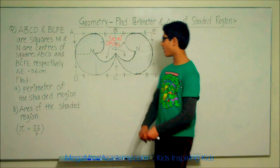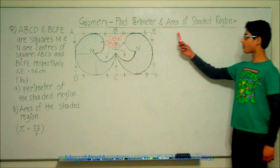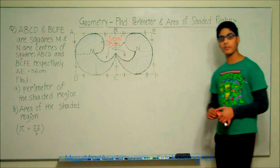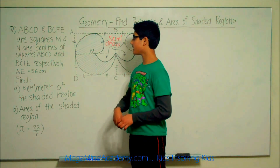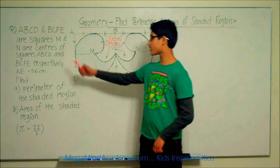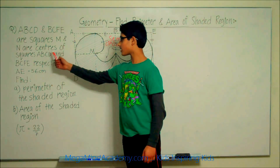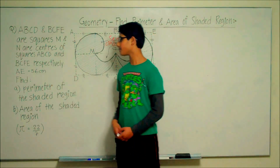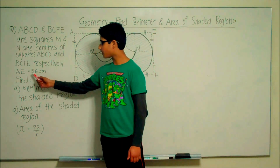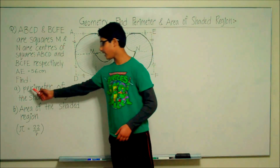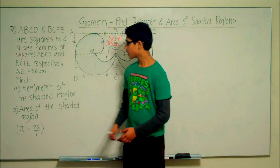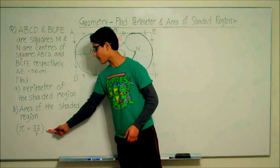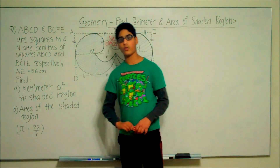Today we're going to learn about geometry, finding the perimeter and area of the shaded region. We have a problem where ABCD and BCFE are squares. M and N are centers of squares ABCD and BCFE respectively. AE is equal to 56 centimeters. Find A, the perimeter of the shaded region, and B, the area of the shaded region. PI is equal to 22 over 7.